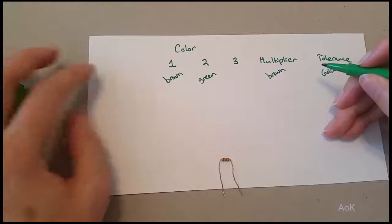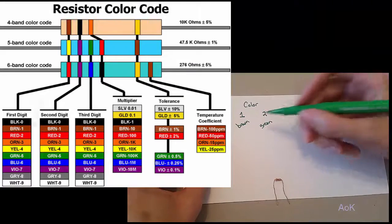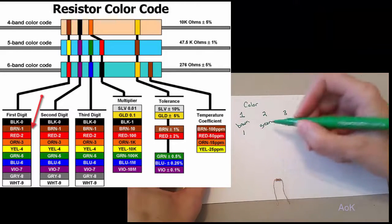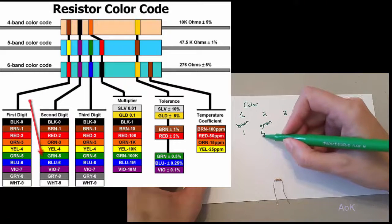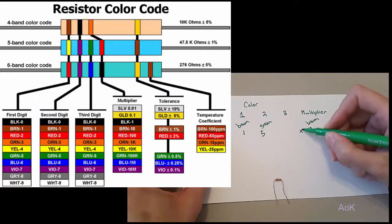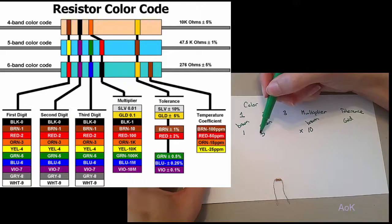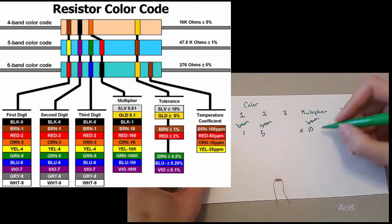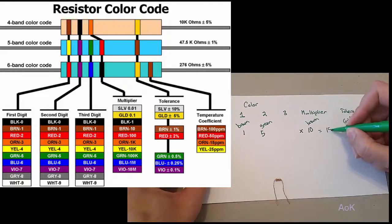So what does this translate to? Well brown represents 1, green represents 5, the multiplier is 10. So you're multiplying 15 by 10 to equal a value of 150 ohms.